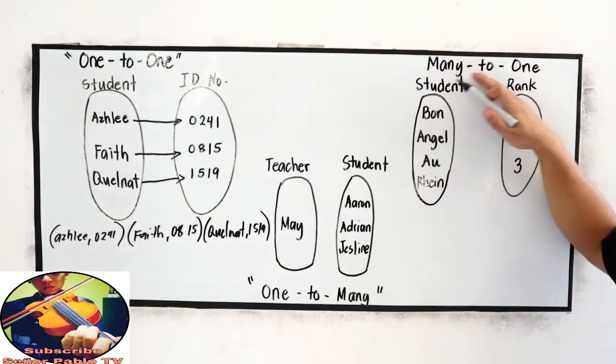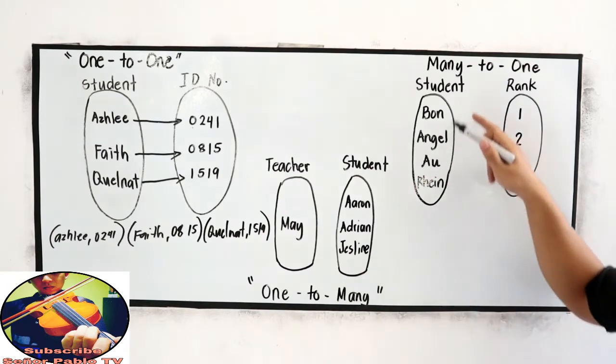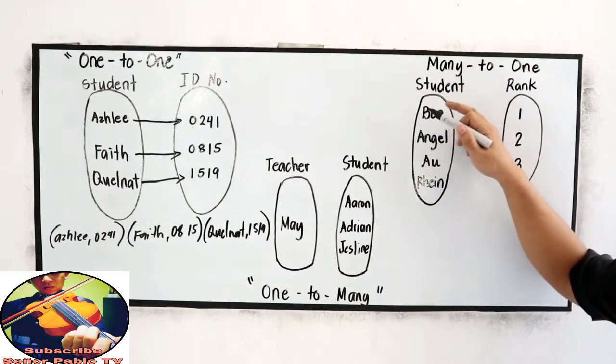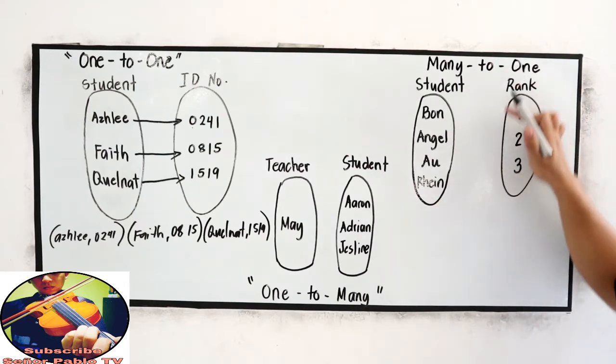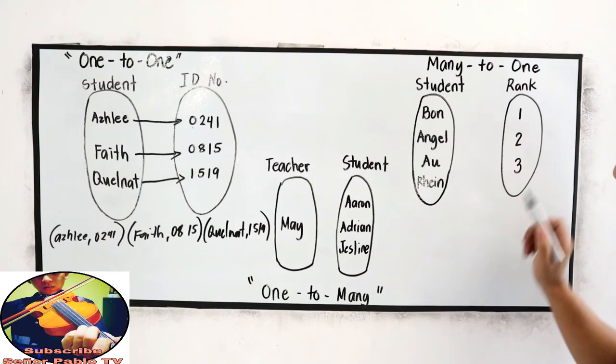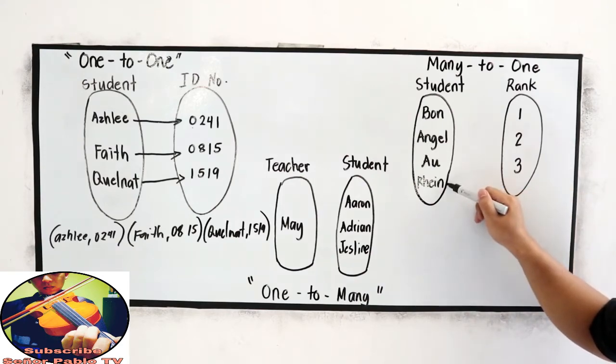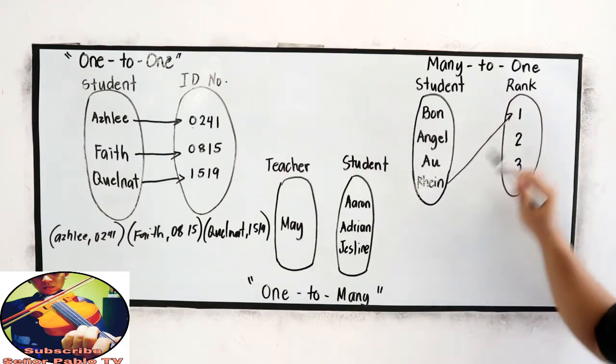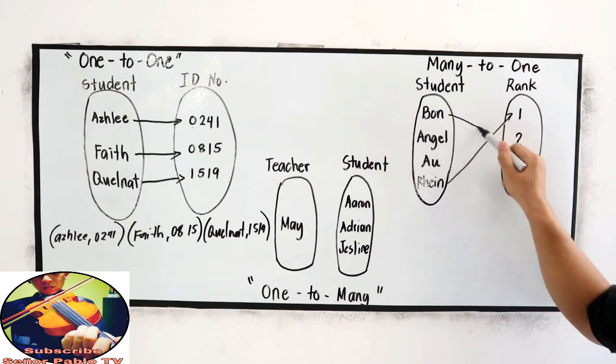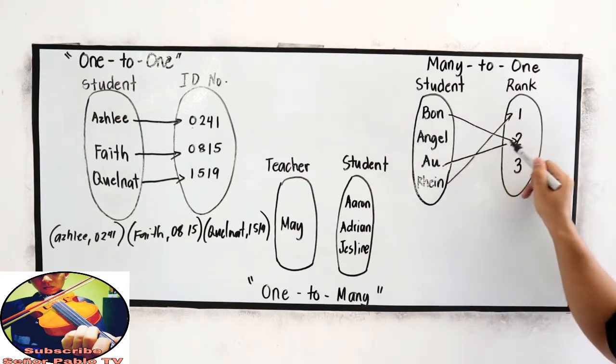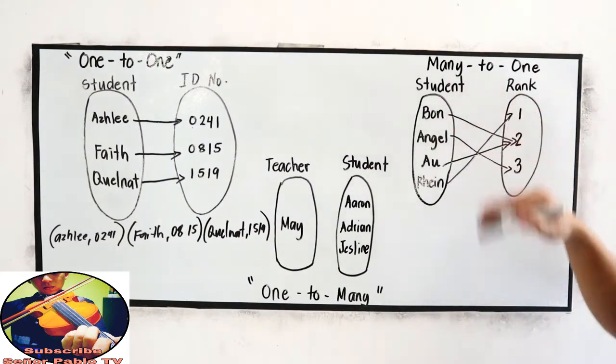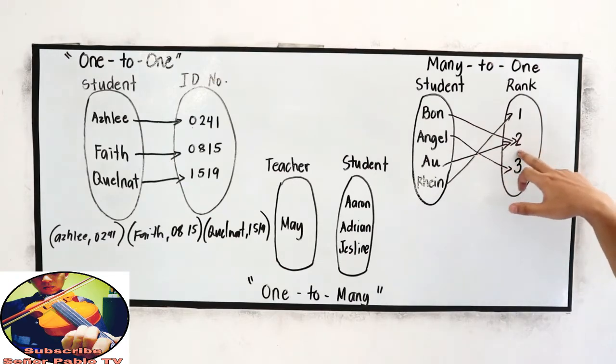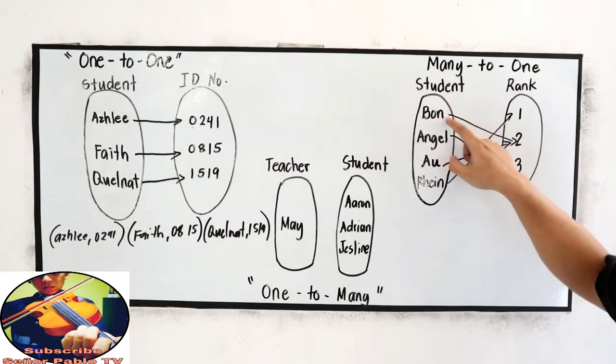Let's proceed to many-to-one correspondence. In our domain, we have the name of the students. Let's say Bon, Angel, Au, and Rain. And they're wrong. We have the first, second, and third. Let's say Rain as our rank 1. Bon and Au are our rank 2. And Angel will be the rank 3. We name it many-to-one because look at rank 2. It has a domain of 2 students. Bon and Au.